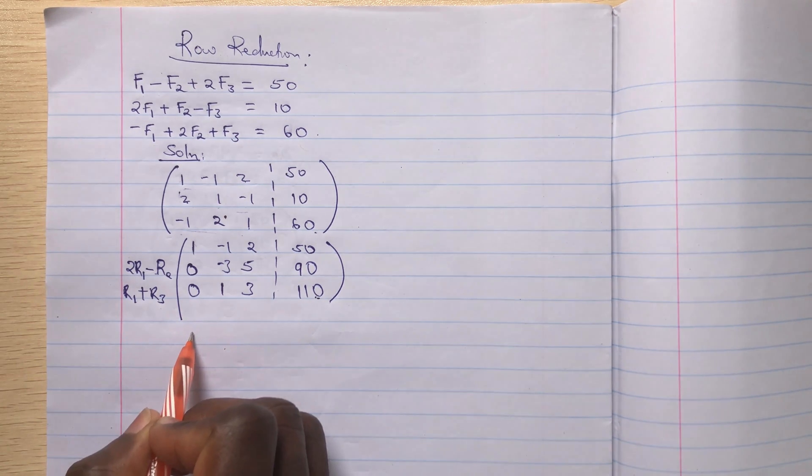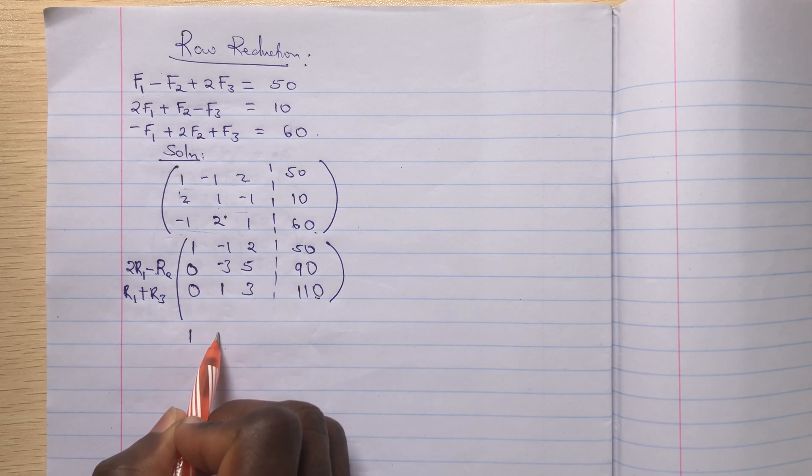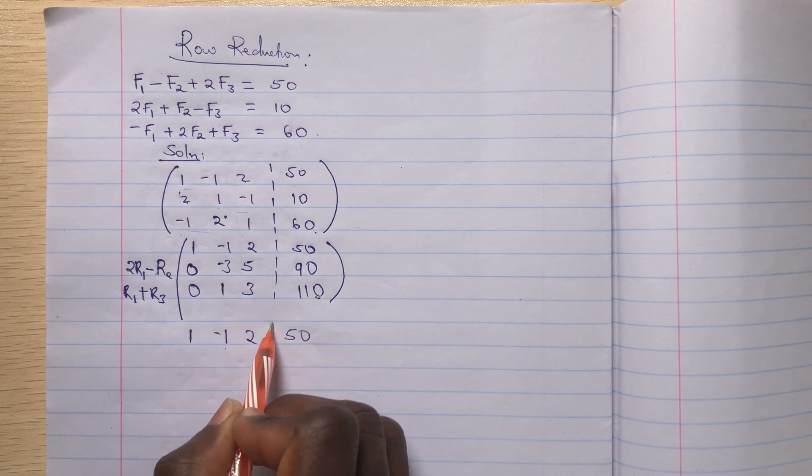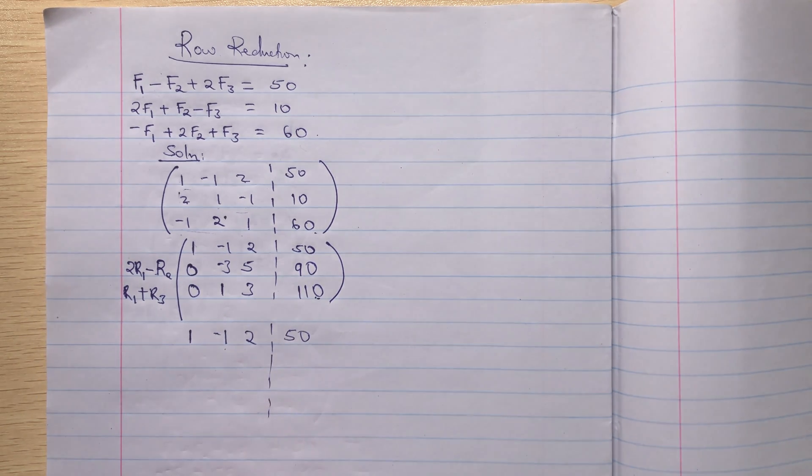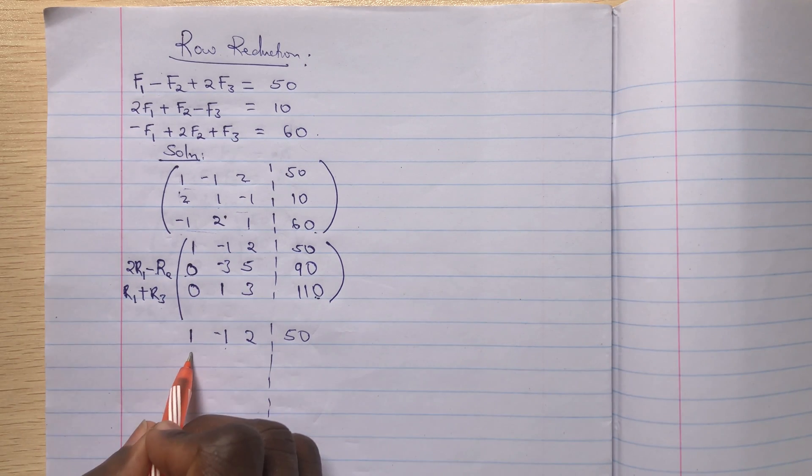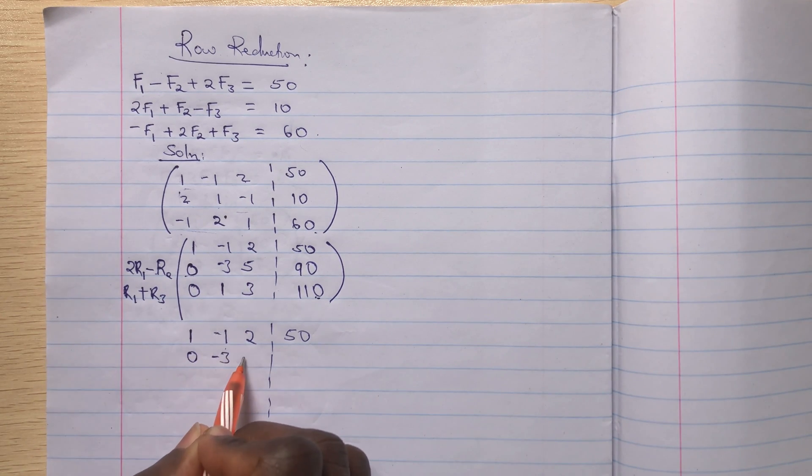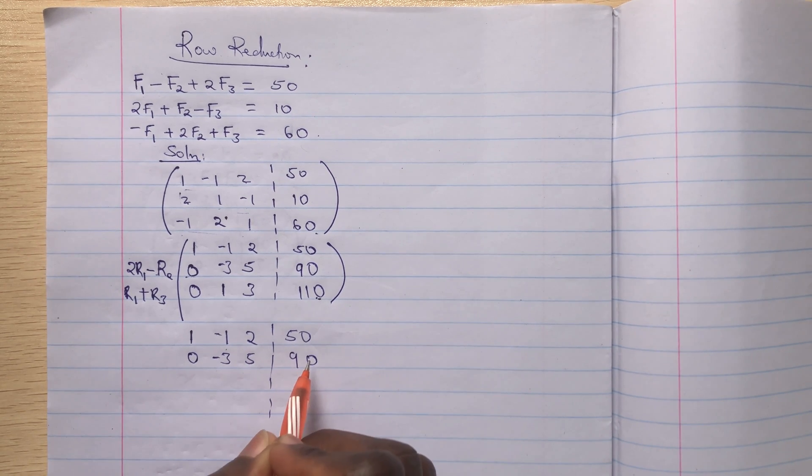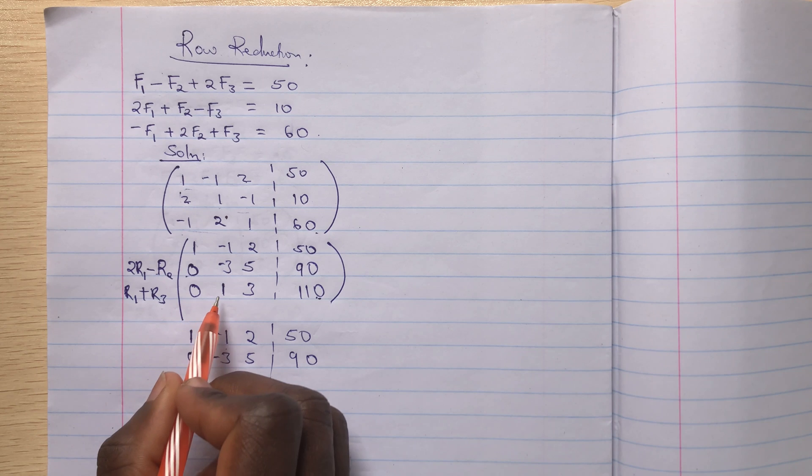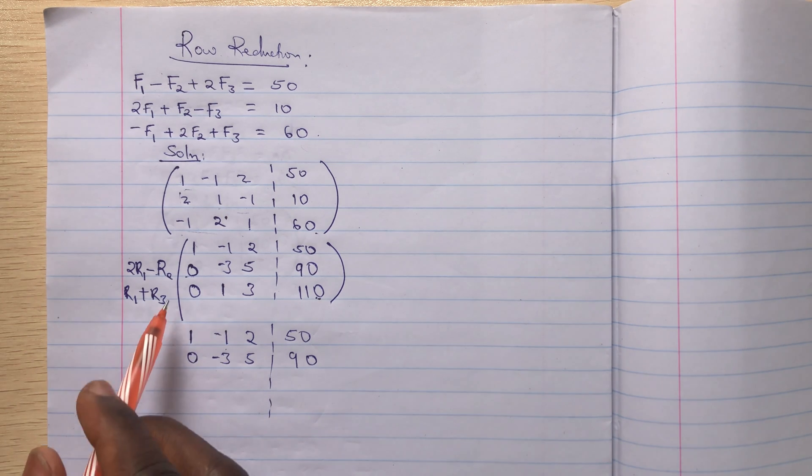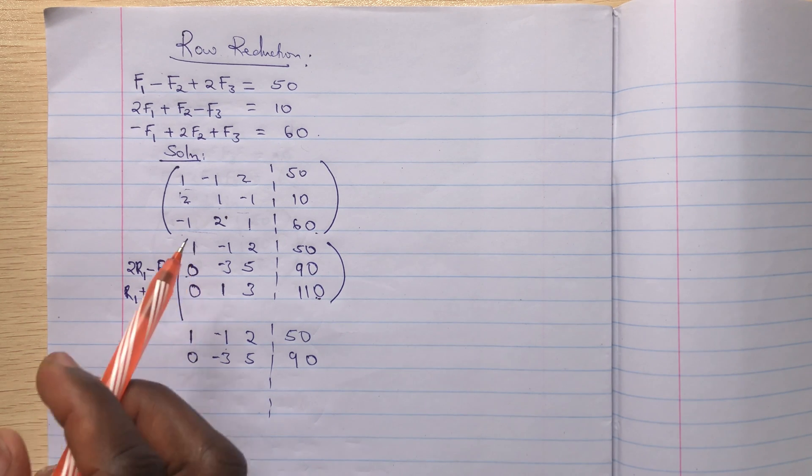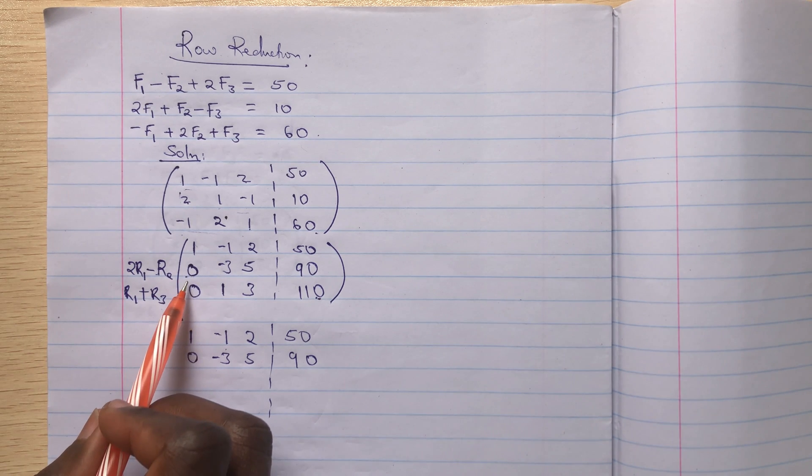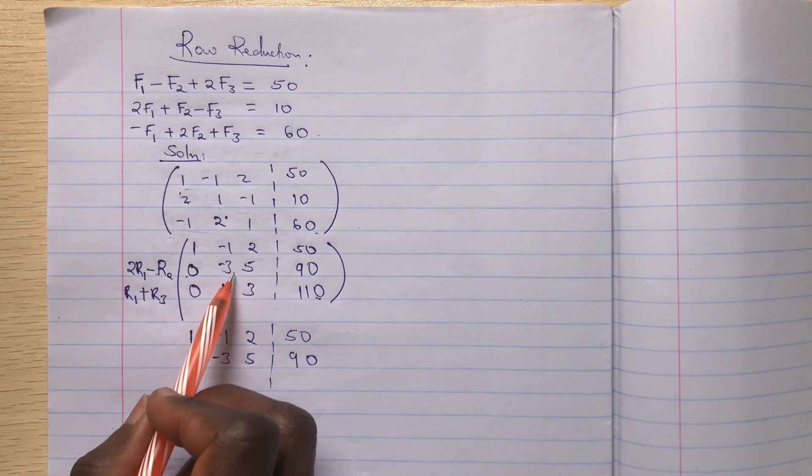So let's do that. So I'll write that: 1, 2, this is my 50. So this will also remain unchanged: 0, negative 3 and 5, then 90. Then this, the one that we need to change. So this time now, we're not using the first row to subtract, we'll use the immediate row, the middle one.